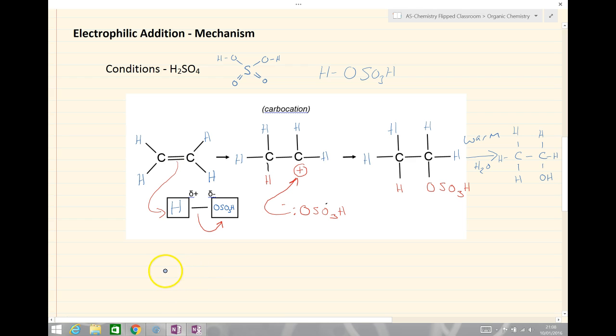Overall, what we have is ethene plus water. Because the H2SO4 initially undergoes electrophilic addition but is then reformed in this final step here at the end. The H2SO4 is actually acting as a catalyst and this forms C2H5OH which is ethanol and we'll be looking in a bit more detail later on at how we can make this. We tend to actually use phosphoric acid in industry but we can use it with concentrated H2SO4 as well.